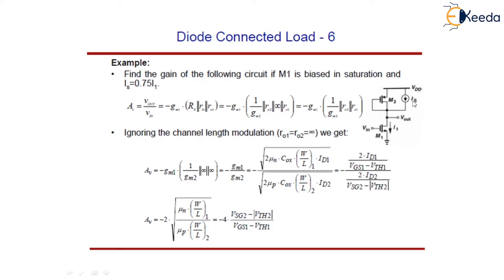IS, the current source, is given carrying a current which is 0.75 times of I1. The voltage gain can be found as Vout by Vin, and it equals minus gm·R. As you can see, this diode-connected device is PMOS, and in PMOS we should neglect the body effect because it doesn't affect our gain.